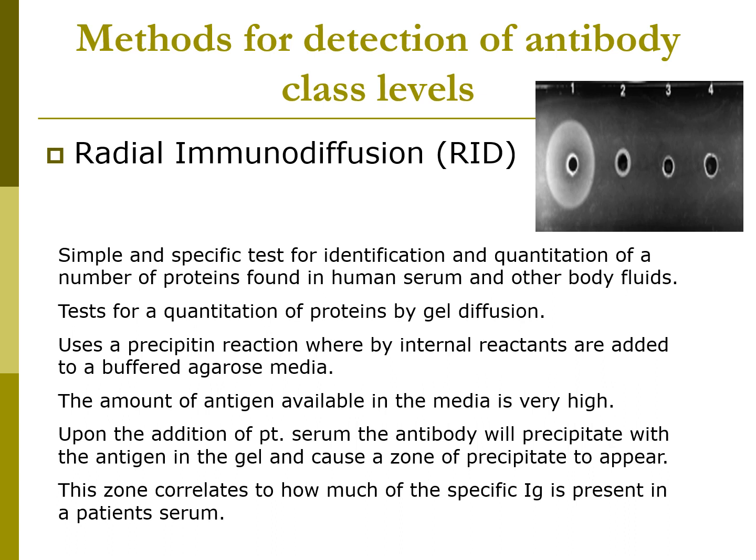Looking at the image on the right: an antigen is placed in an agarose gel, and 5 microliters of patient serum are placed into a circle. We watch for precipitation to diffuse around that circle, then measure the zone of precipitation. We compare that zone size to a chart that tells us the amount of protein in the serum, whether that be an immunoglobulin, CRP, or others.